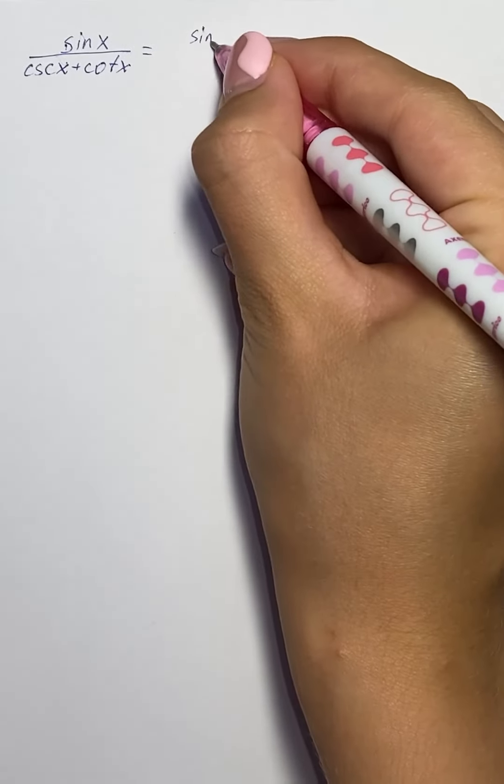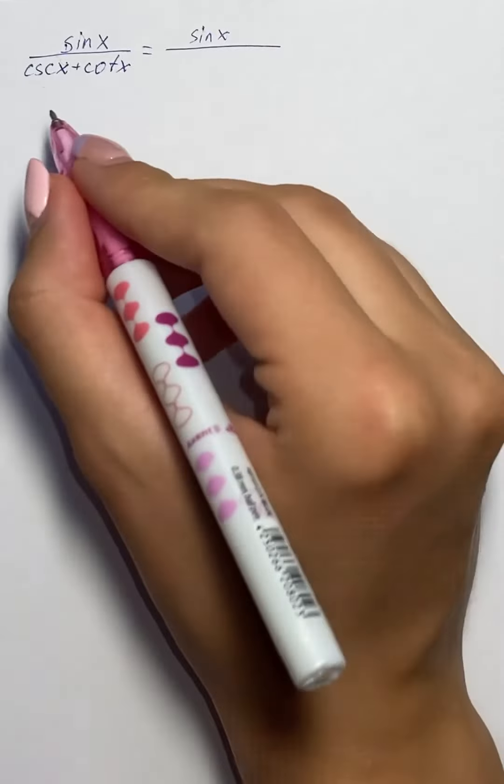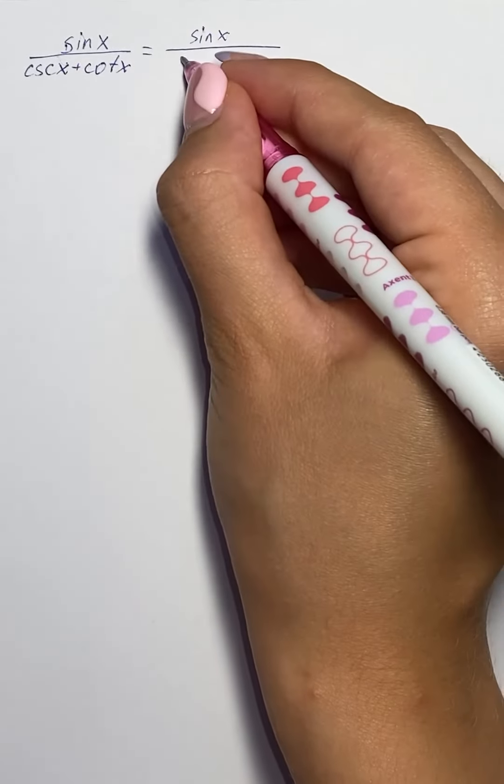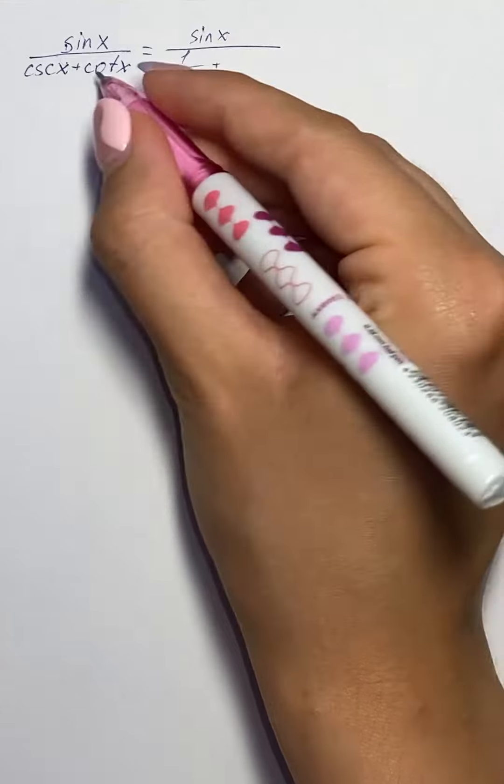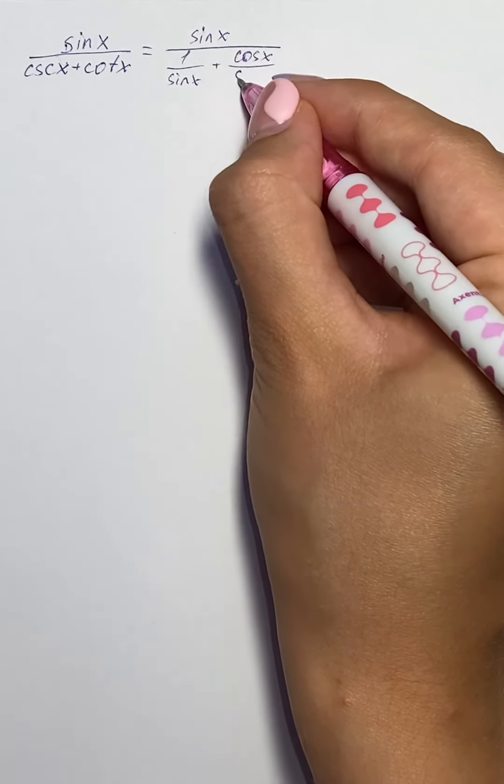So we have sine of x in the numerator, and in the denominator we can rewrite cosecant of x as 1 over sine of x, and cotangent of x as cosine of x over sine of x.